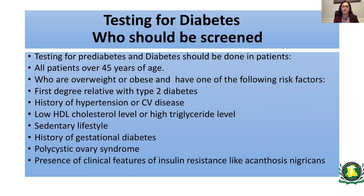Who should we screen for diabetes? Testing for pre-diabetes and diabetes should be done in all patients over 45 years of age. Additionally, all those who are overweight or obese and have one of the following risk factors must be screened: first-degree relatives with type 2 diabetes, history of hypertension or cardiovascular disease, hyperlipidemia, sedentary lifestyle, history of gestational diabetes, polycystic ovary syndrome, and presence of clinical features of insulin resistance like acanthosis nigricans.